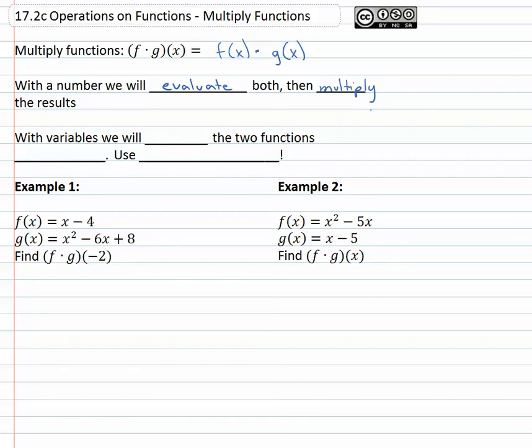And with variables, this is even simpler because all we have to do is multiply the two functions together. Now it's very important with multiplication that you use parentheses to be sure we're multiplying by the entire function, not just the first term. Those parentheses are important with multiplication.